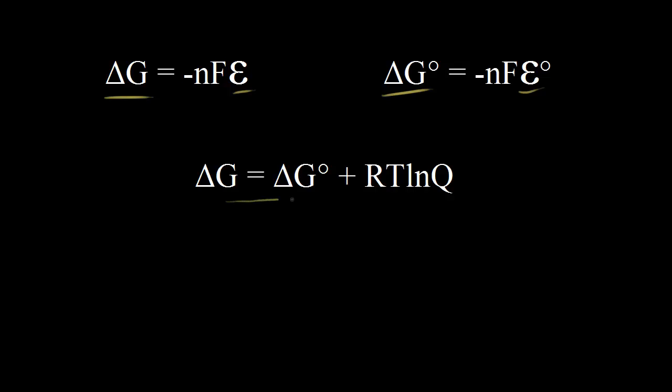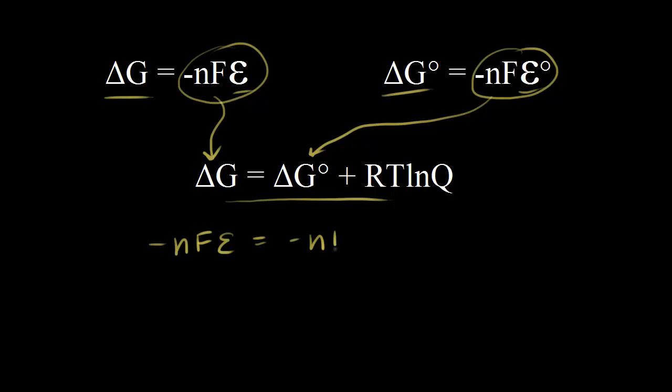This equation down here comes from thermodynamics, and we're gonna plug in for delta G and delta G zero. So that gives us negative NFE is equal to negative NFE zero plus RT natural log of Q, where Q is the reaction quotient.